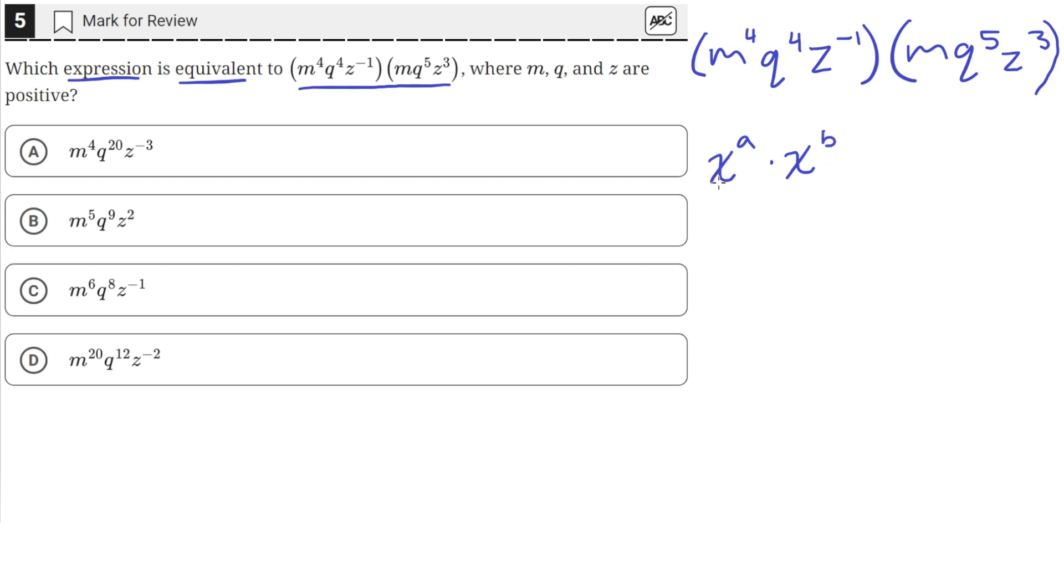As long as the base is the same—which is the thing being raised to the power—when you multiply these two together, you keep the base the same and add the exponents. So here, x to the a times x to the b equals x to the a plus b.